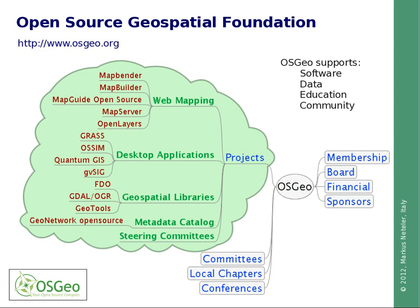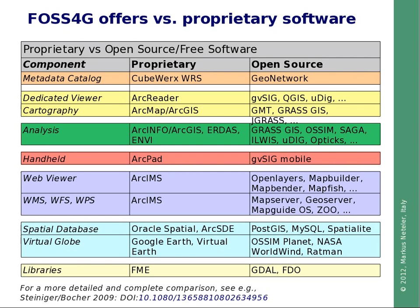What are the offerings of FOSS4G compared to proprietary software? In this table, on the left side you can see the different components, from metadata catalogues to dedicated viewers, cartography tools, GIS analysis, handheld and mobile, web services and viewers, spatial databases, virtual globes, and libraries. The center column lists proprietary products, and on the right side you see open source answers. For each proprietary product, there is at least one open source product available, often several to choose from. A more complete and detailed comparison has been published as a scientific article.